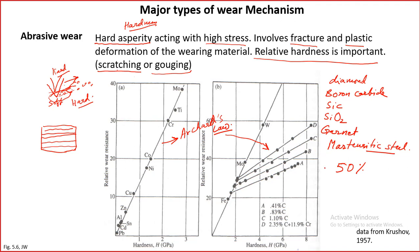Abrasive wear often happens because of dust particles and also debris particles. Debris particles tend to be oxides — for example, if steel is involved, it will form oxides such as FeO and Fe₂O₃. These oxides tend to be very hard particles, so wear debris becomes harder after getting oxidized, and this leads to further abrasive wear.